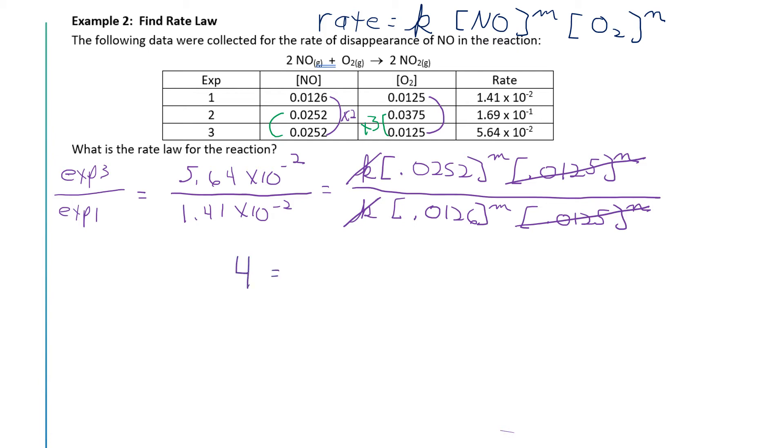So we have 4 is equal to—trying to rewrite that right hand side a little bit—we can move that exponent of m outside of the brackets. In the top we have 0.0252, and in the bottom, 0.0126. If you look at what's inside of the brackets, that gives us a value of 2 raised to the m. The value of that exponent that makes this equation true is 2, because 2 squared is equal to 4. And so this reaction is second order with respect to NO.